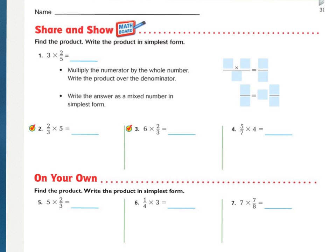Press pause while you work on the share and show. You have 4 problems for the share and show to work on. So on number 1, they walk you through the steps. Multiply the numerator and the whole number. Write it over the denominator. There's your answer. And then reduce it as a mixed number to the simplest form.